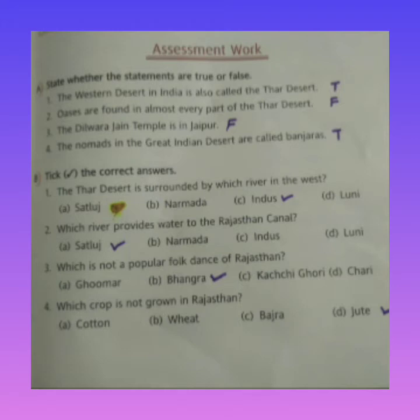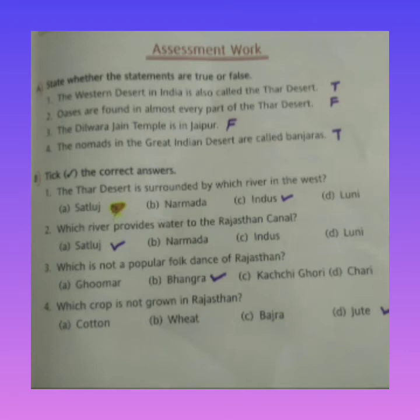First question: the Thar Desert is surrounded by which river in the west — Satluj, Narmada, Indus, or Looni? The answer is the Indus river. Second question: which river provides water to the Rajasthan Canal — Satluj or Narmada? The Satluj river provides water to the Rajasthan Canal.